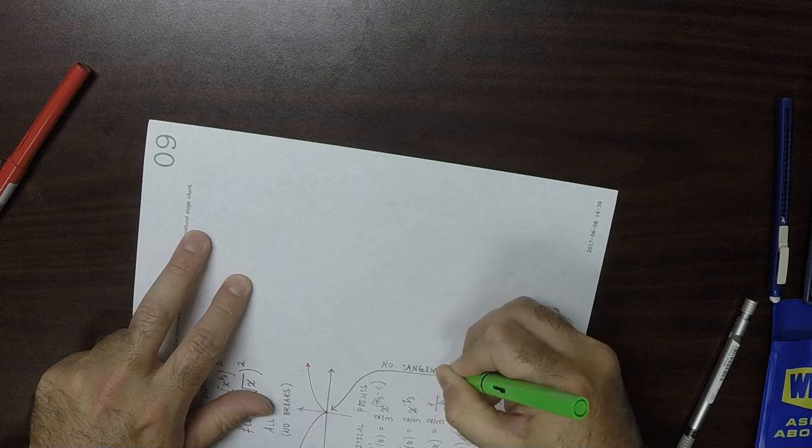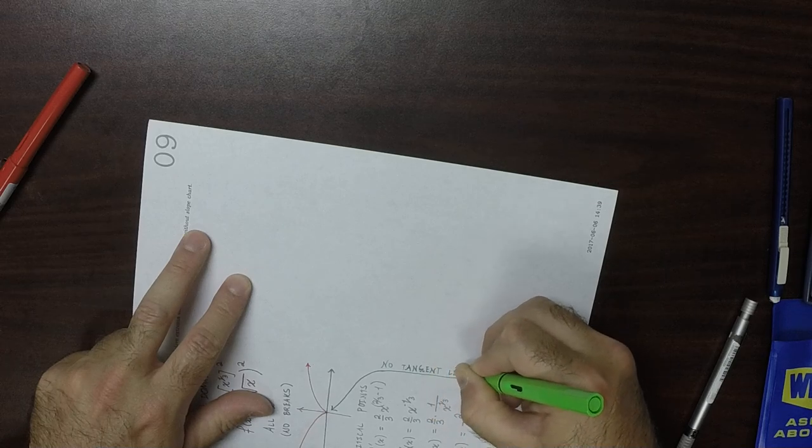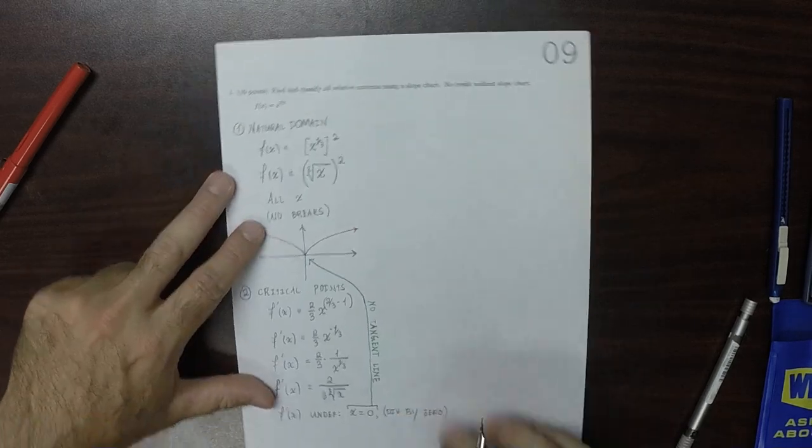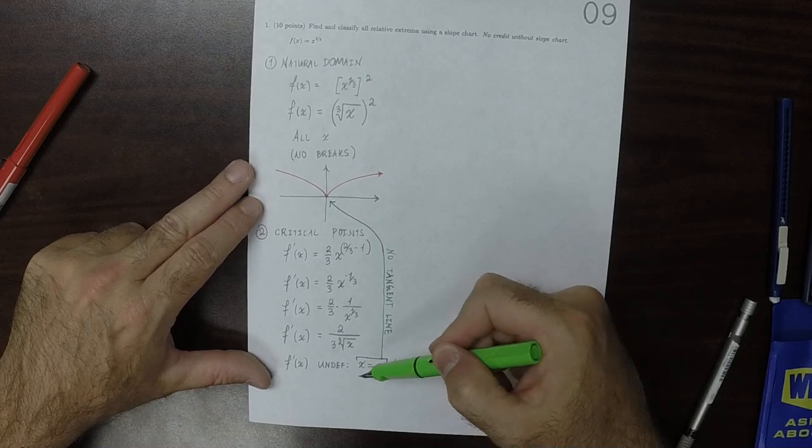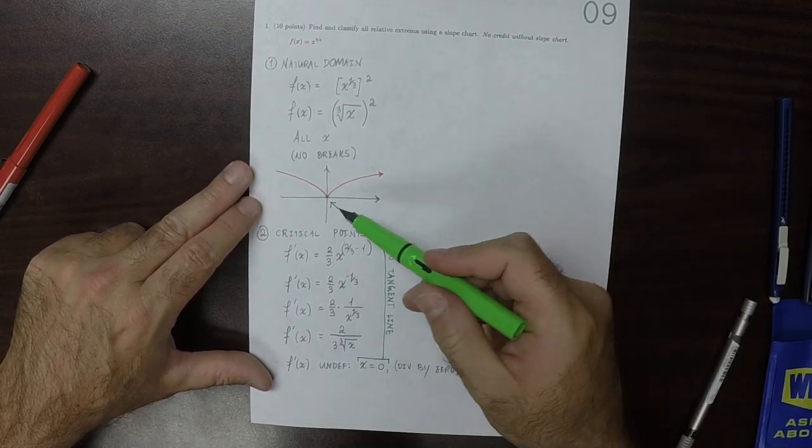That's a pointy place on the function, so we had every expectation that there's going to be no tangent line. Because, after all, that's what the geometry of an undefined derivative means. It means that there's no tangent line.